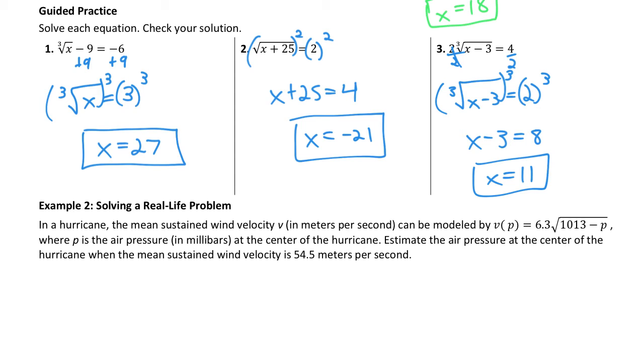Third equation, isolate the radical by dividing both sides by two, raise both sides to the third power, x minus three is eight, x is 11.